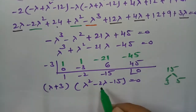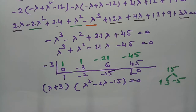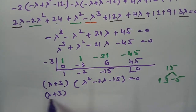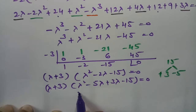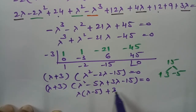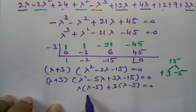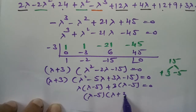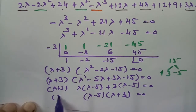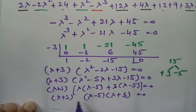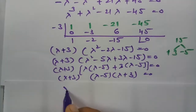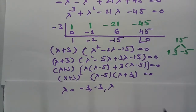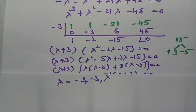Factoring λ² − 2λ − 15: we get (λ − 5)(λ + 3) = 0, since 3 × 5 = 15 and −5 + 3 = −2. So the full factorization is (λ + 3)²(λ − 5) = 0, giving eigenvalues λ = −3 (repeated) and λ = 5.